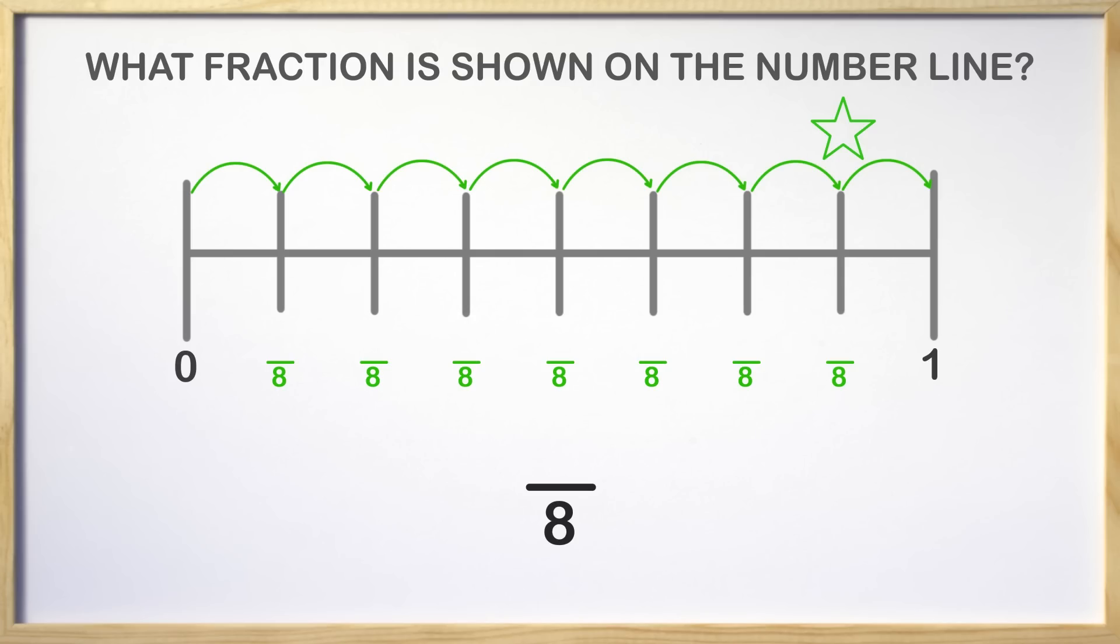All that is left to do is count the parts up to the green star. Counting again, we count one, two, three, four, five, six, seven. We have both the numerator and the denominator, and the fraction shown is seven eighths.